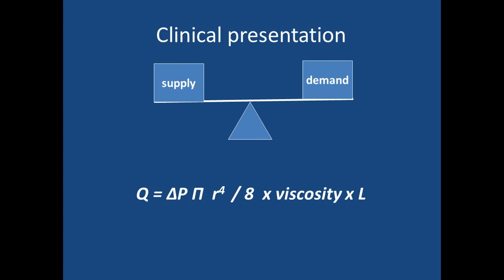Symptomatology depends on the critical balance between supply and demand. Blood flow in an artery depends on the pressure difference across the vascular territory multiplied by the radius of the vessel to the power 4, divided by 8 times viscosity and vascular length. Significant stenosis, increased viscosity as in polycythemia, reduction in vessel radius, or low pressure gradient will all reduce blood flow and worsen symptoms.